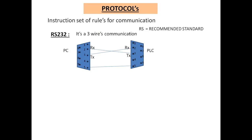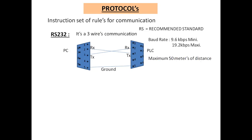So your data should not be lost in between, and for that they have grounding. The last pin, number five, is used for ground. This protocol also defines at what speed it can transfer data. The minimum baud rate is 0.6 kbps — kbps stands for kilobits per second — and maximum it can go up to 19.2 kbps.